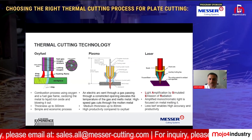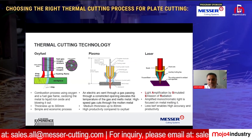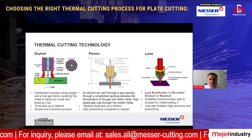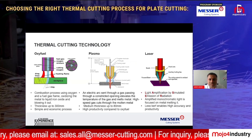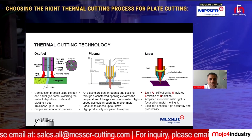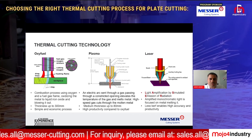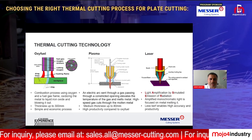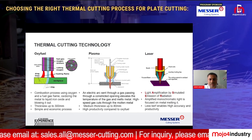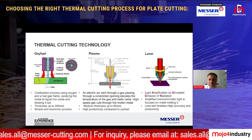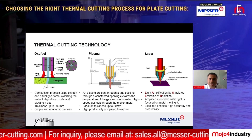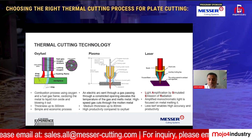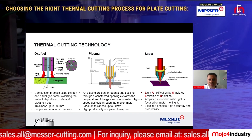The fuel gas can be LPG, acetylene, Barut metal cutting gas, CNG, or LNG, all of which are widely used. The oxyfuel process works by oxidizing the metal to liquid iron oxide and blowing it out. Its key advantages are that it can cut mild steel with thickness up to 300 mm. It is a simple, slow process but economical.